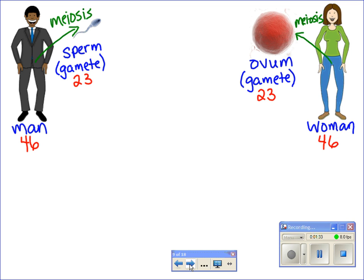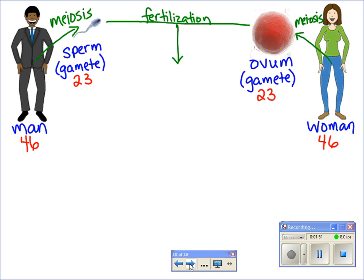So men have sperm, women have ovum, or ova, and they need to come together somehow. Now, how that actually happens, I'll leave that to your health teachers in case you don't know. But on a cellular level, the process is known as fertilization. And when the sperm and the ovum come together in fertilization, it creates a zygote.